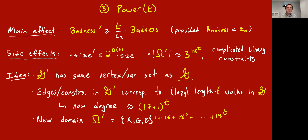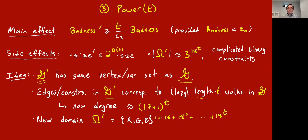The idea: you take this three-CSP G which has been made an expander — and that's crucial for powering. The output CSP G prime is going to have the same vertex set, just many more edges. The powering operation is kind of like t-th powering the adjacency matrix, so the edges, i.e., constraints, in the new CSP G prime correspond basically to length-t walks or length-t paths in the input graph G.